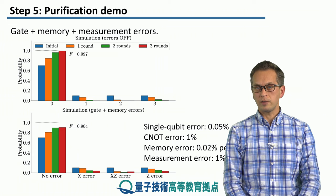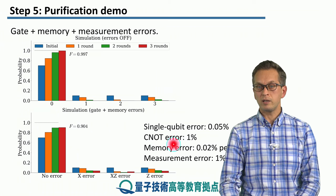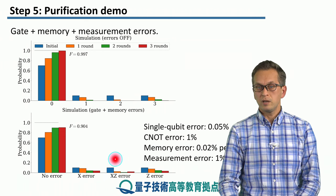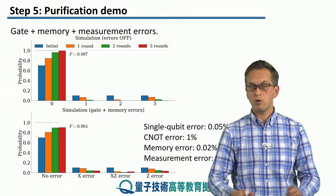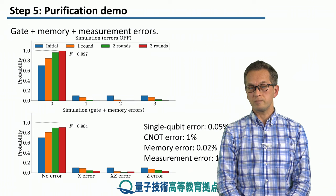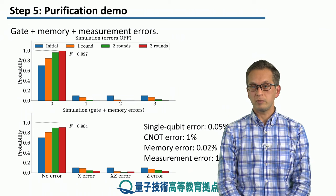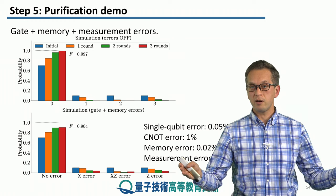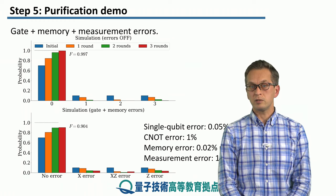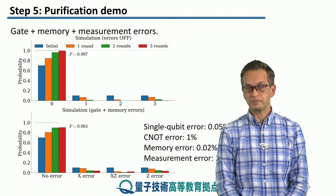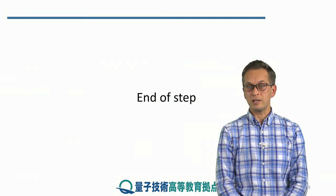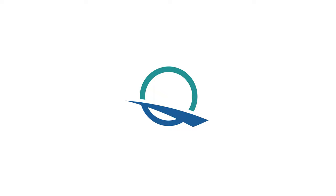Now there's one disclaimer to keep in mind, and those are the memory errors. Memory errors and their significance depends on how far your nodes are — how long your link between your quantum nodes is. If they are very close, then they're not going to have that much time to decohere. On the other hand, if they are very far, there will be a substantially longer waiting time, which will lead to more memory decoherence. So that concludes our simulation for the simple purification demo, and as well, lesson two. See you in the next lesson.